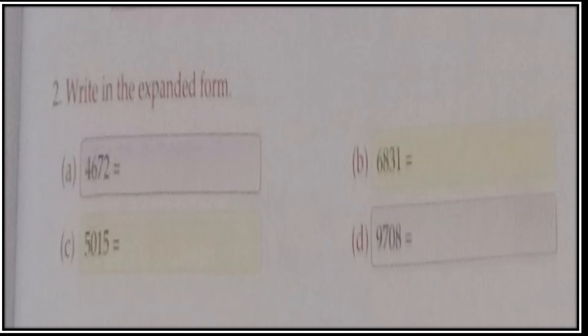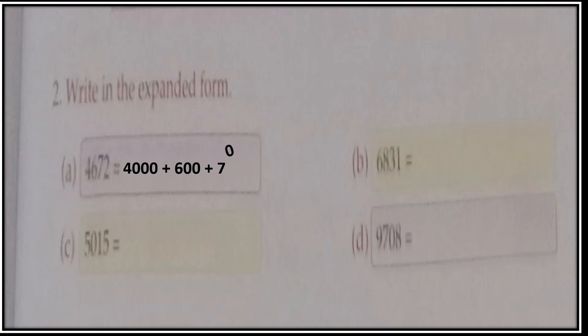Now, write in expanded form. Expanded form means you have to add the place value of all the given digits. See the first question, Part A — 4, 6, 7, 2. The value of 4 is 4,000 because it is at the thousands place. 6 has place value 600, 7 has place value 70, and 2 has place value 2. So you write: 4,000 + 600 + 70 + 2.